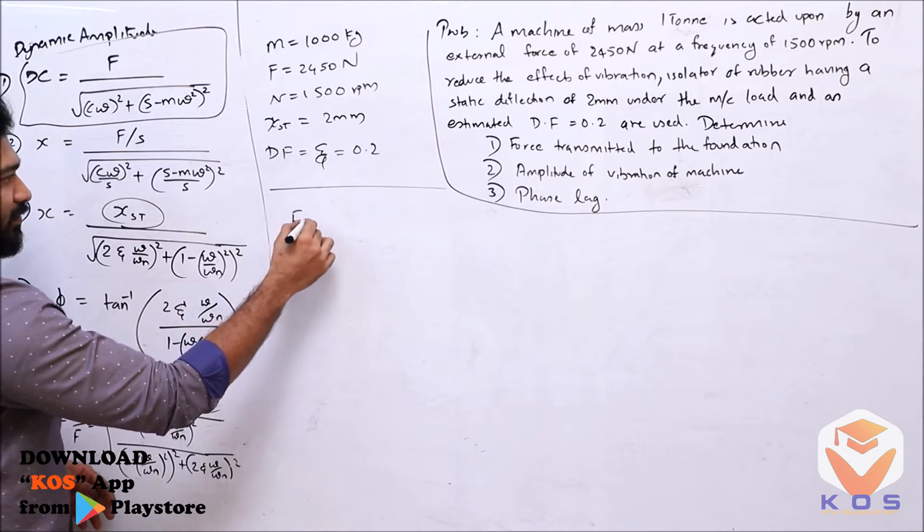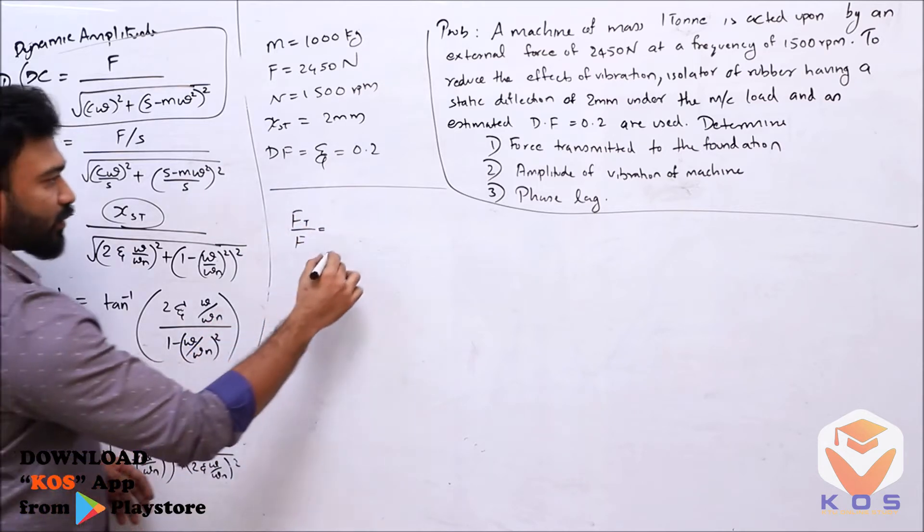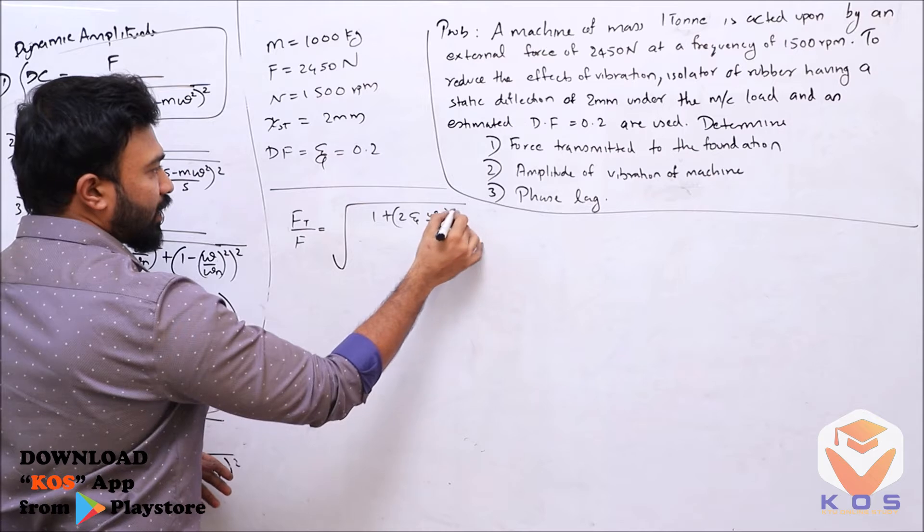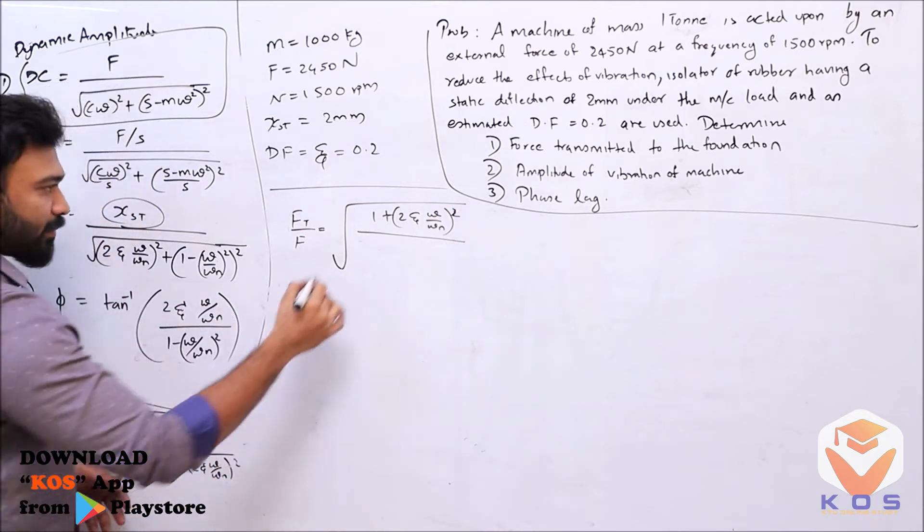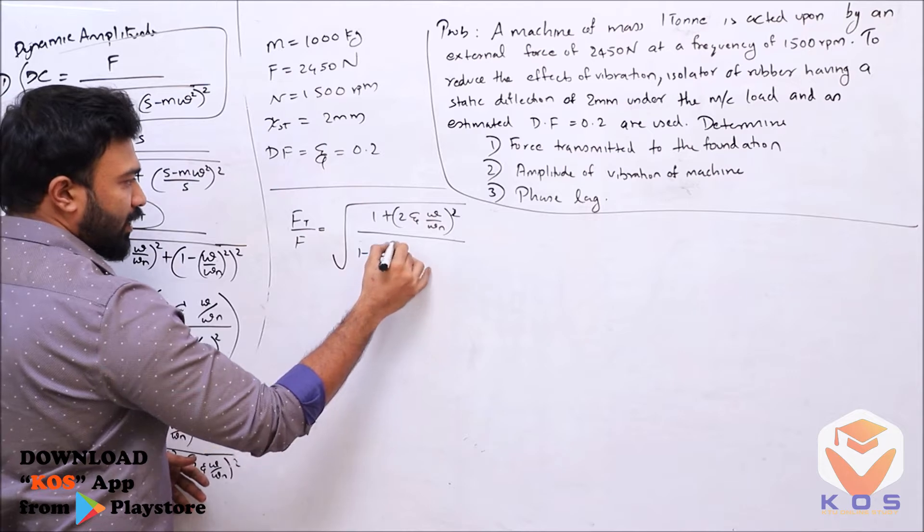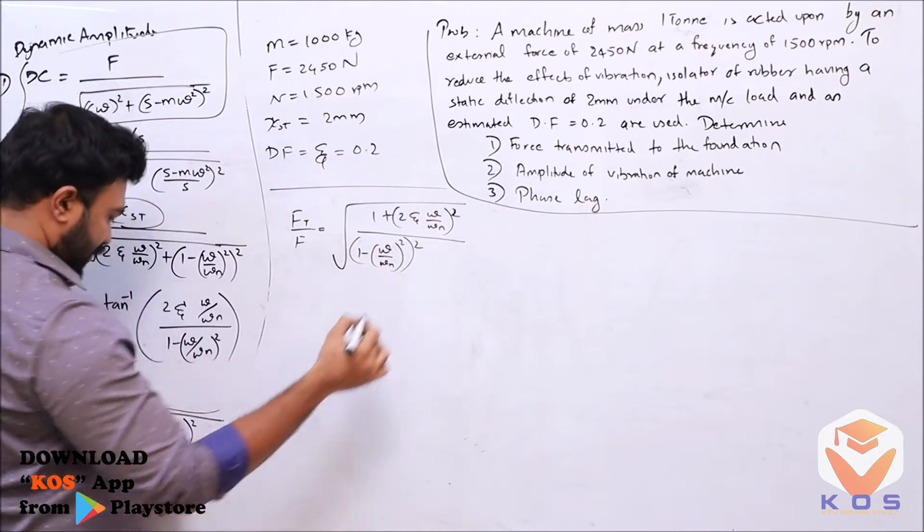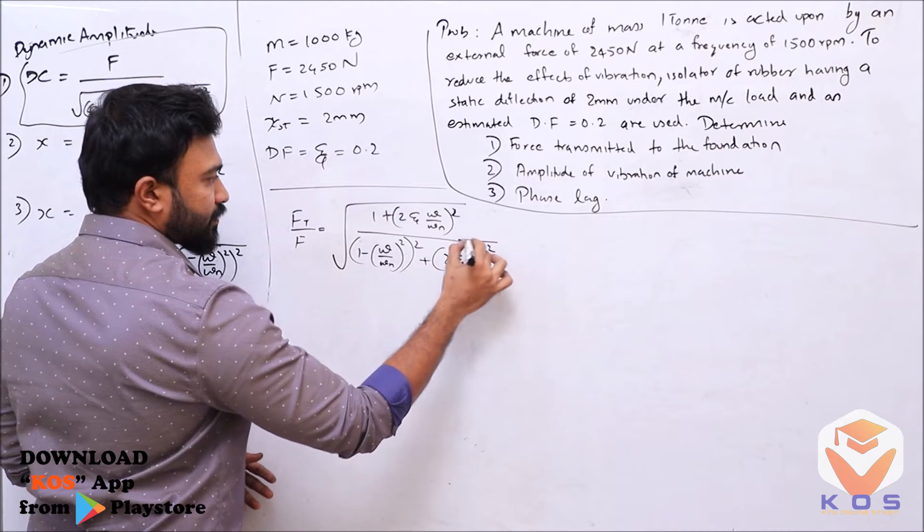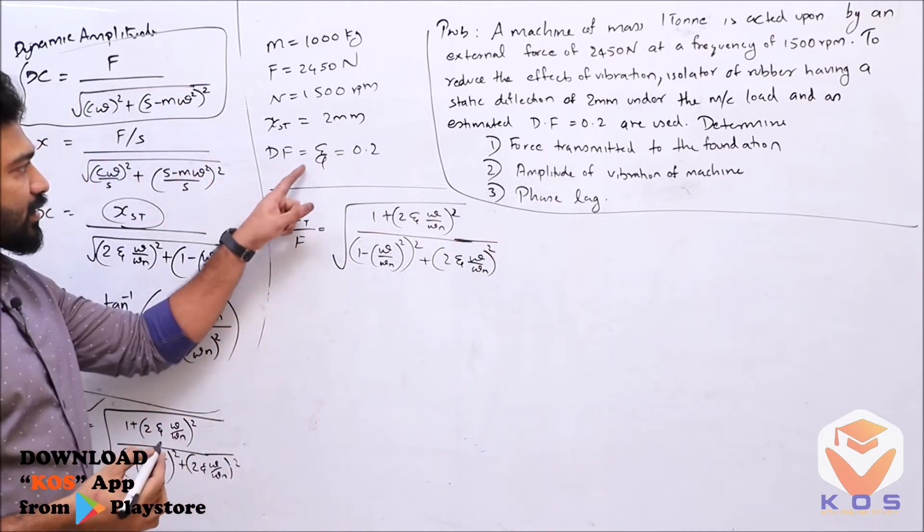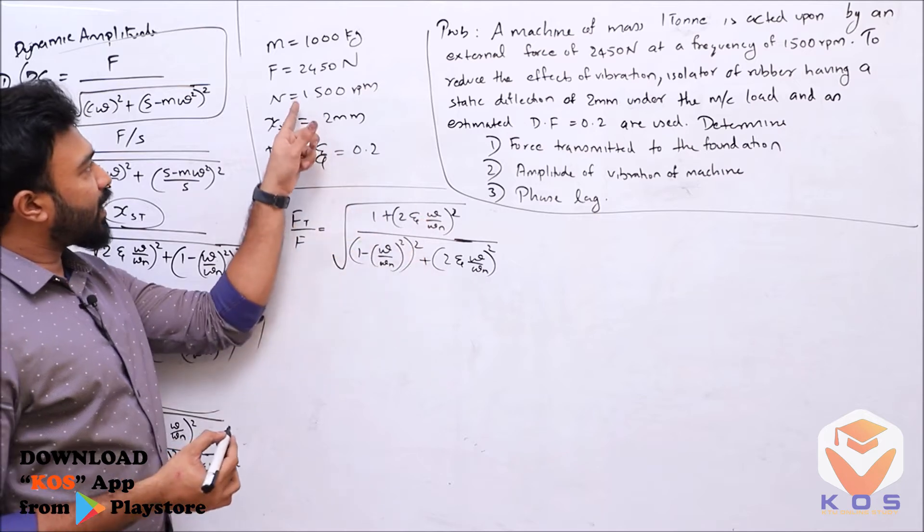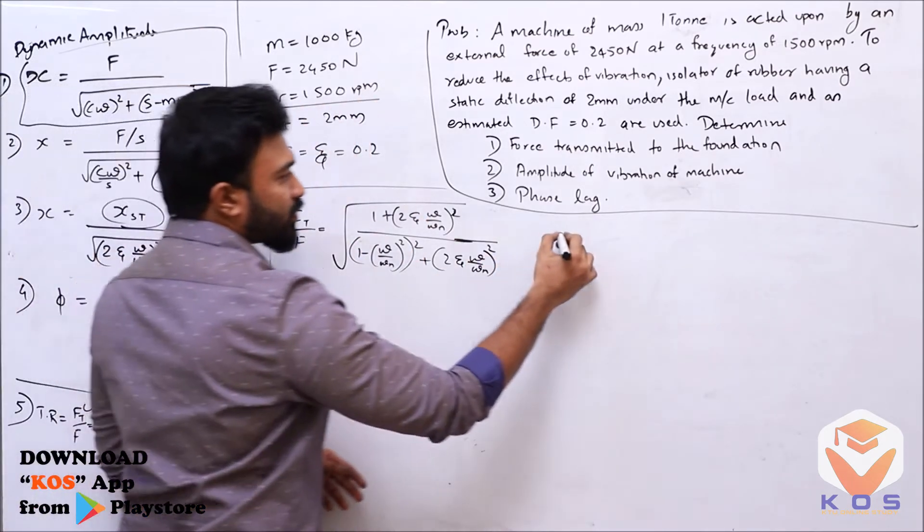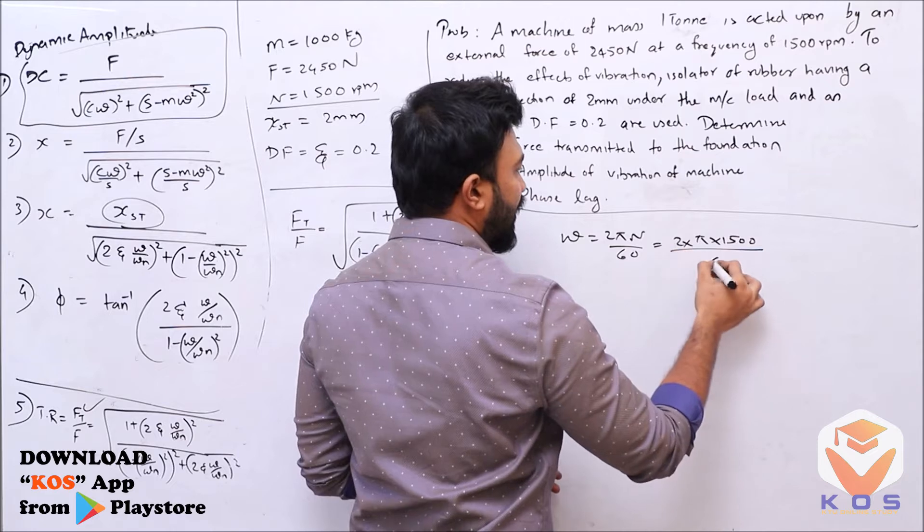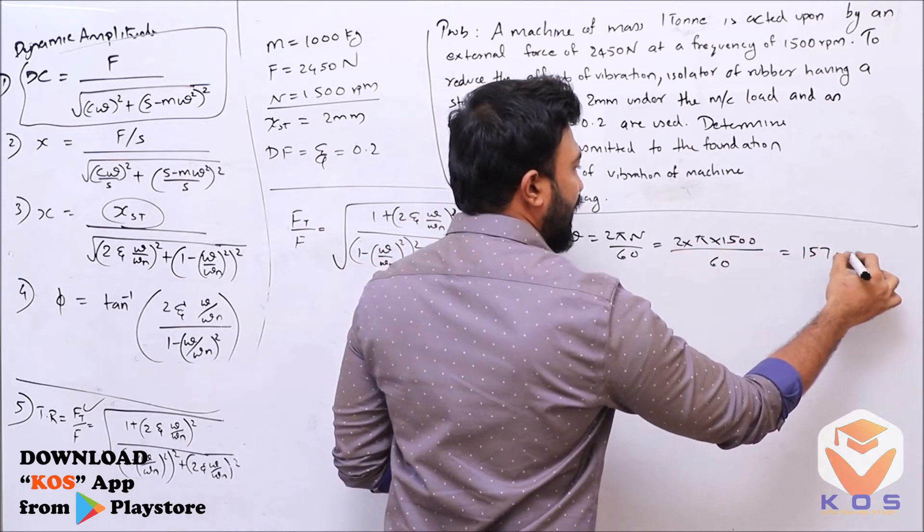So Ft/F equals the equation: square root of [1 + (2*zeta*omega/omega_n)^2] divided by [(1 - (omega/omega_n)^2)^2 + (2*zeta*omega/omega_n)^2]. We have zeta = 0.2, omega = 2*pi*n/60 = 2*pi*1500/60 = 157 radians per second.